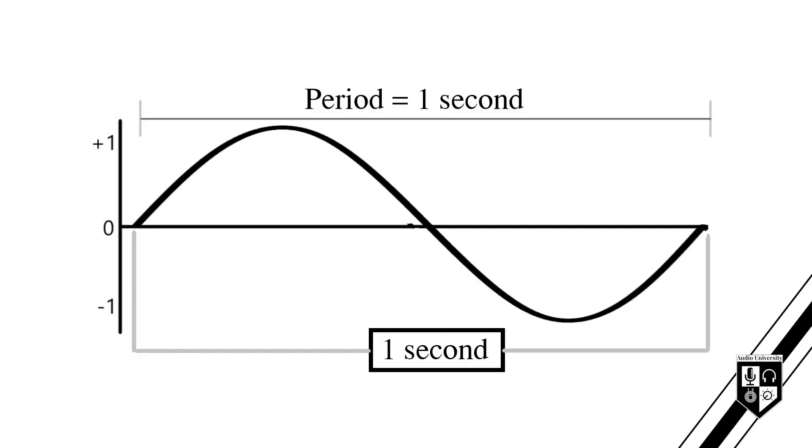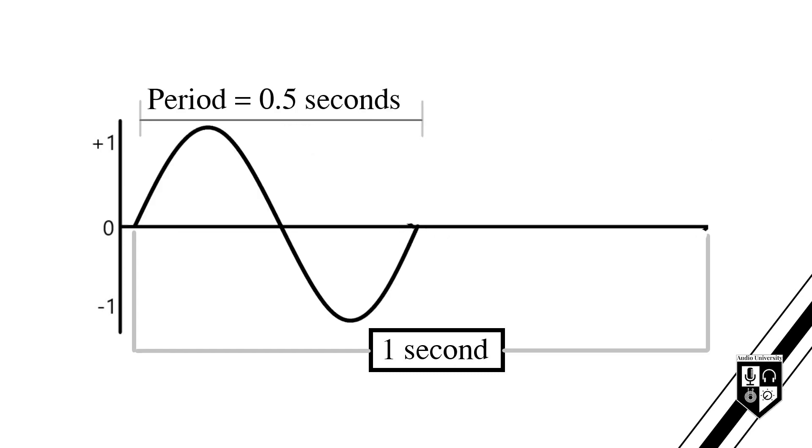Whereas frequency describes how many cycles are completed per second, the period of a wave describes how many seconds it takes to complete one cycle. Period is therefore a measurement of time and is measured in seconds, or usually milliseconds. A sound wave with a frequency of one hertz has a period of one second. A sound wave with a frequency of two hertz has a period of half a second. As you get up into the audible range above 20 hertz, milliseconds become a lot more useful than seconds.